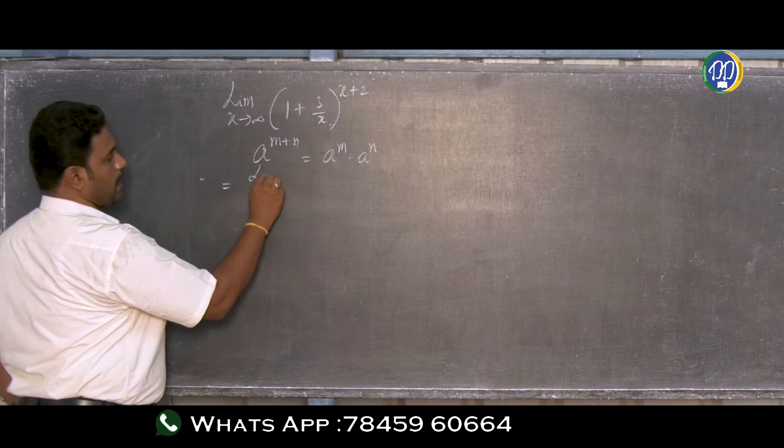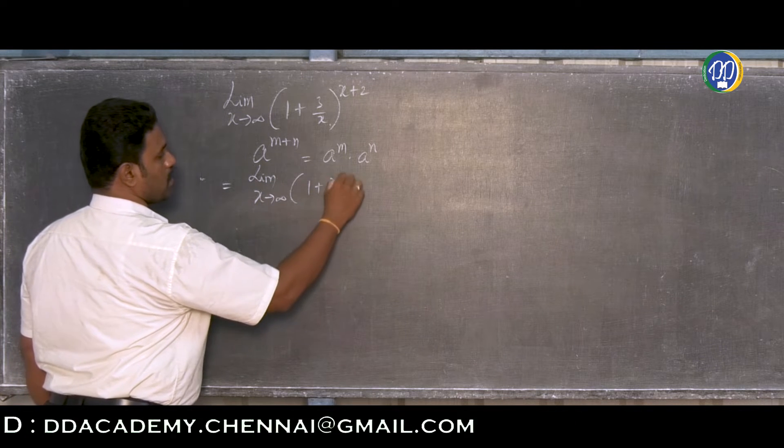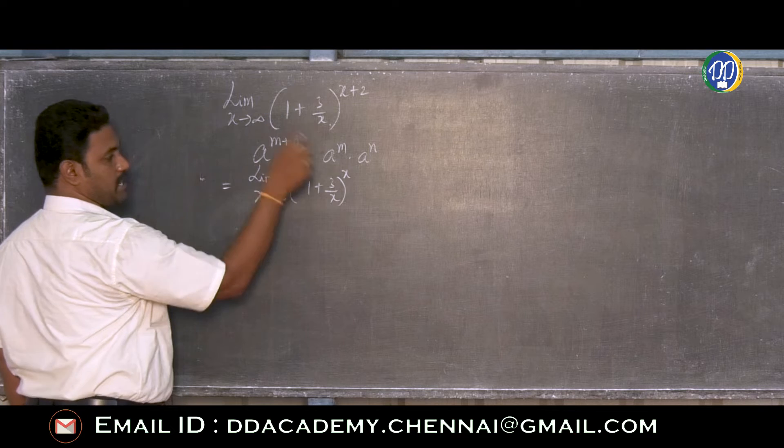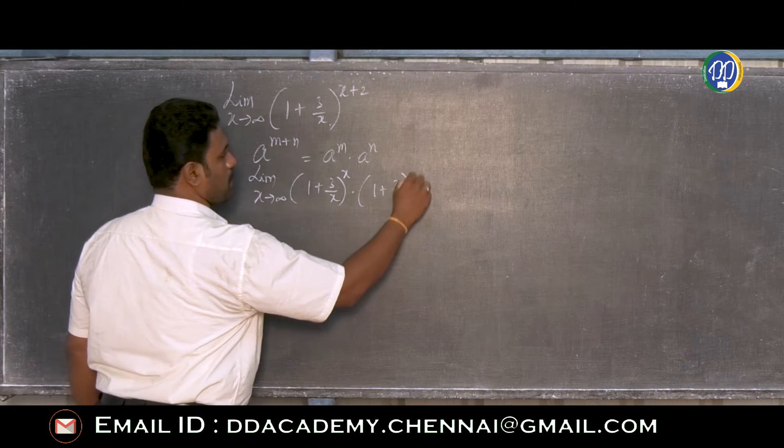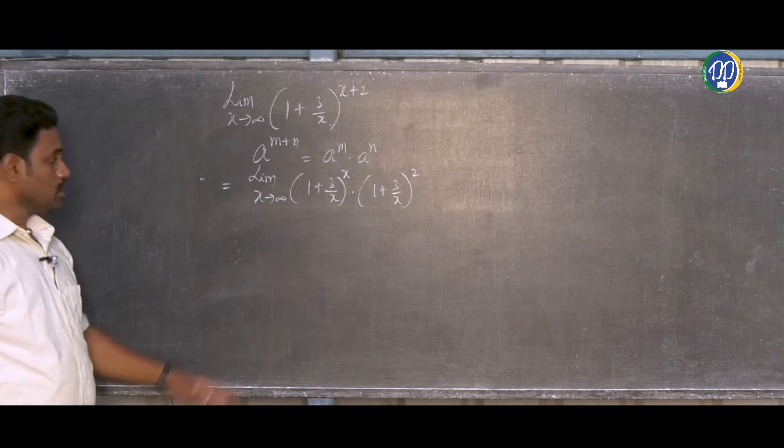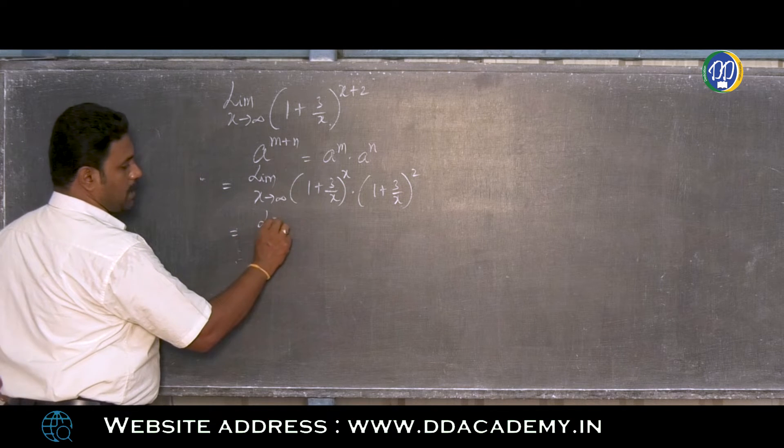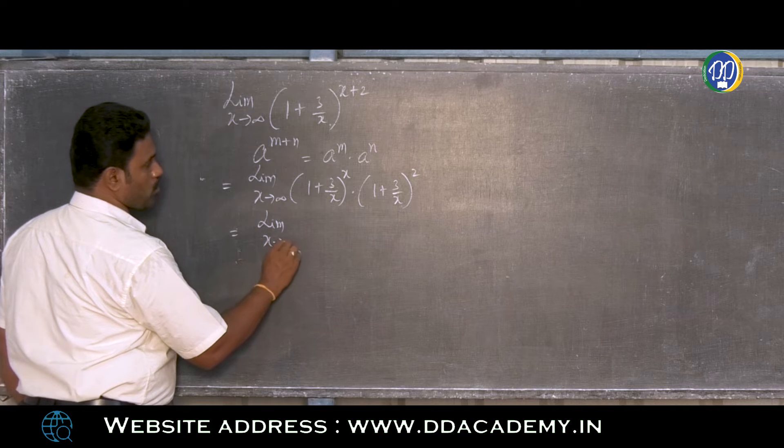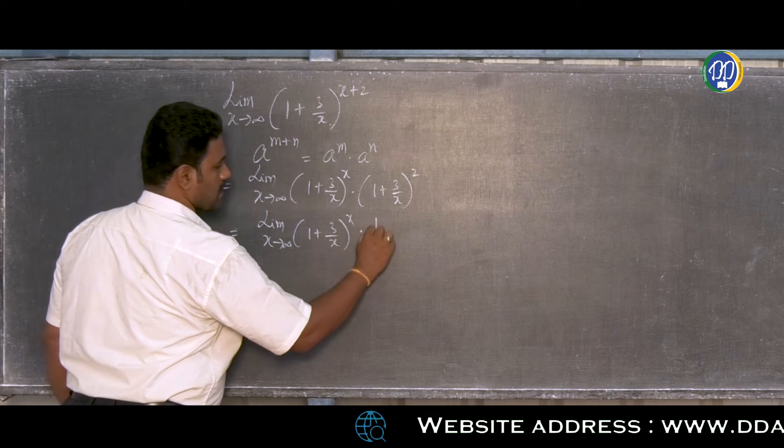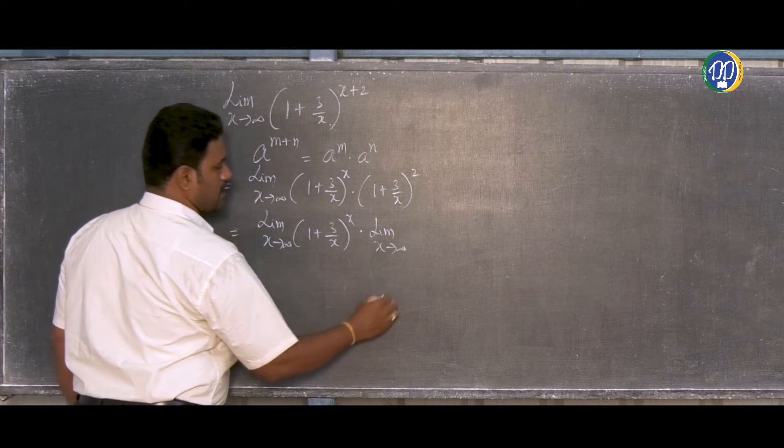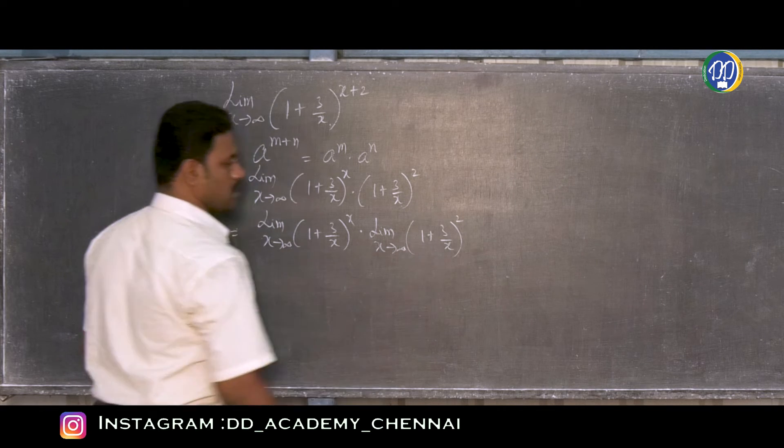We write this as limit x tends to infinity (1 + 3/x)^x times limit x tends to infinity (1 + 3/x)^2. Using the property, the base value with power x plus the second term with power 2.